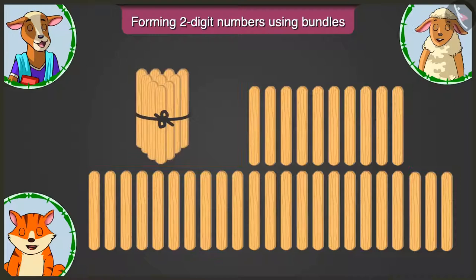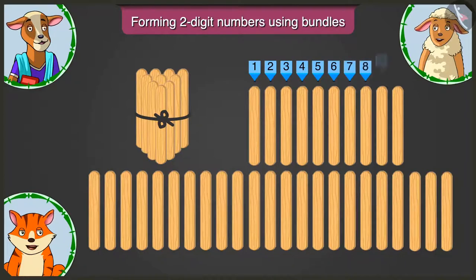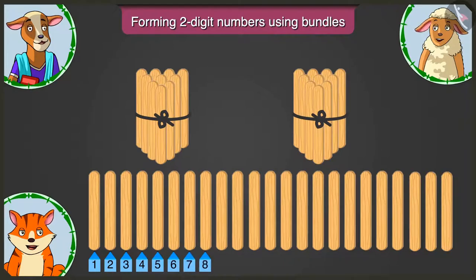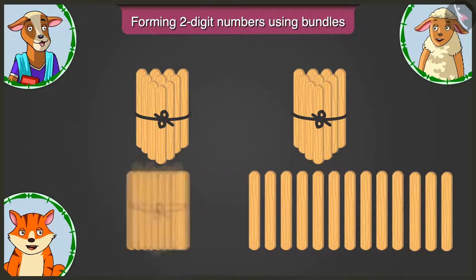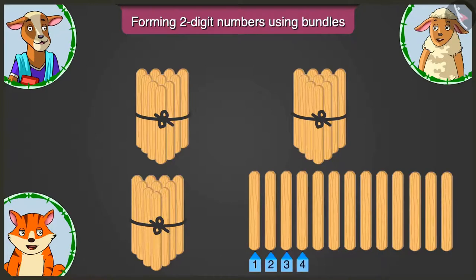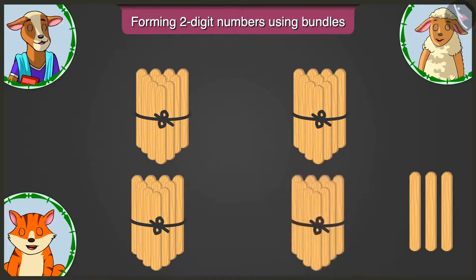Billy, make the second bundle of tens from the remaining sticks. 1, 2, 3, 4, 5, 6, 7, 8, 9 and 10 — this is the second bundle. Now form the remaining bundles. Third bundle: 1 through 10. Lily, can you make another bundle? Yes — 1 through 10. This has also become a bundle of tens.